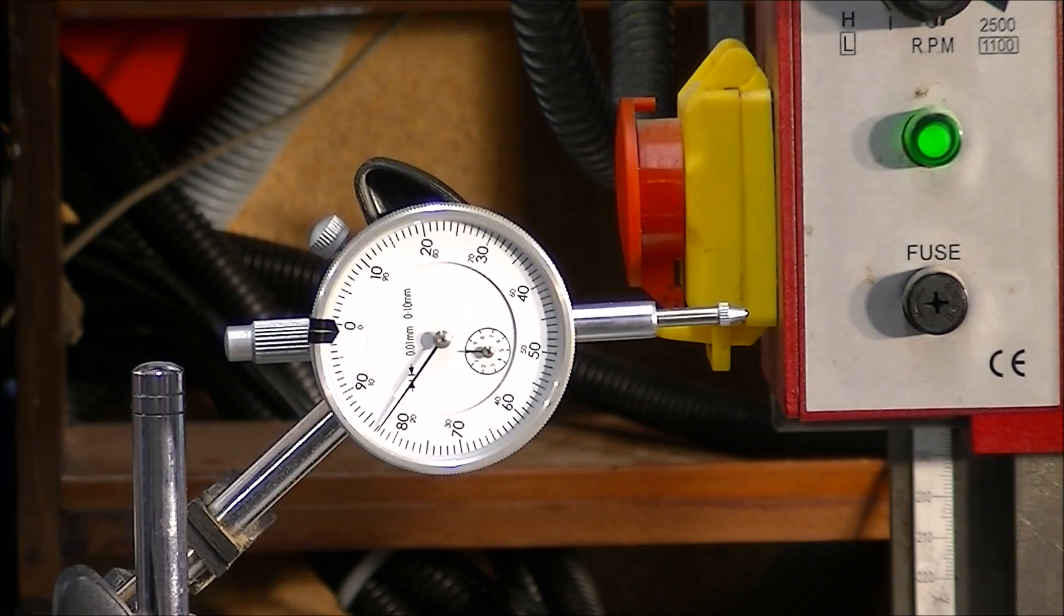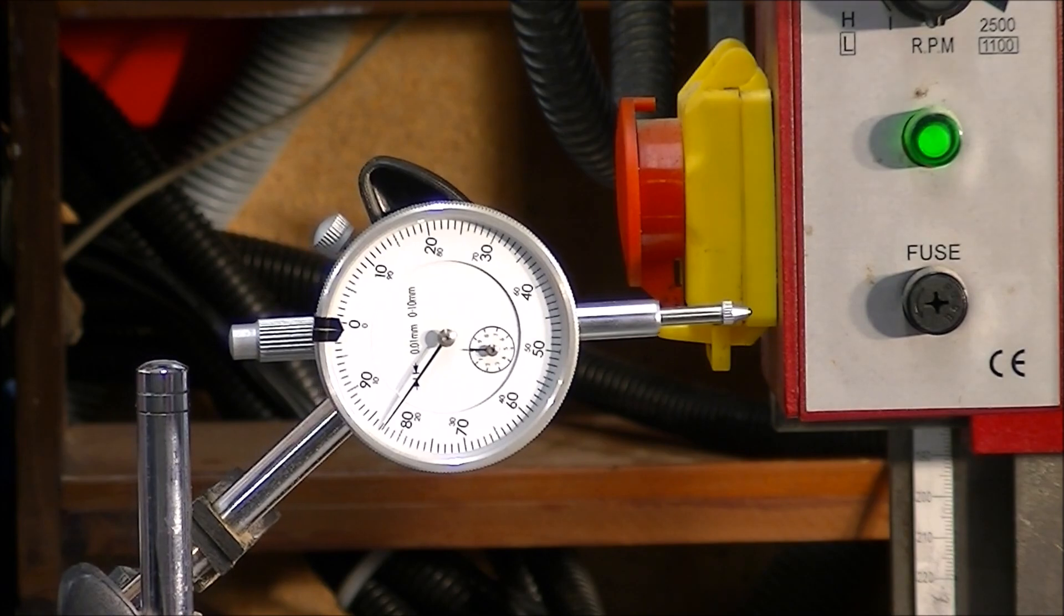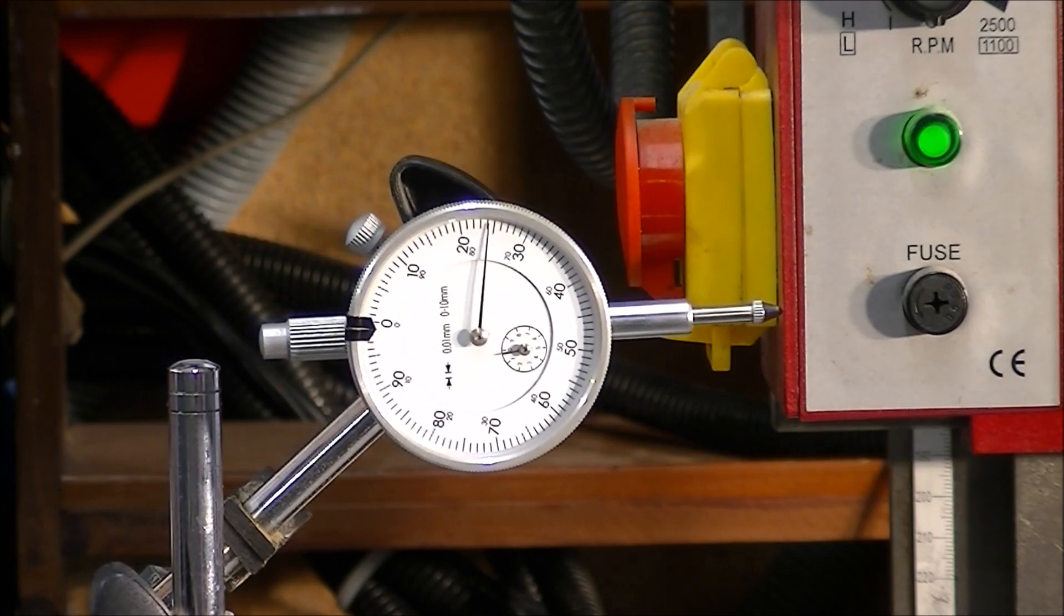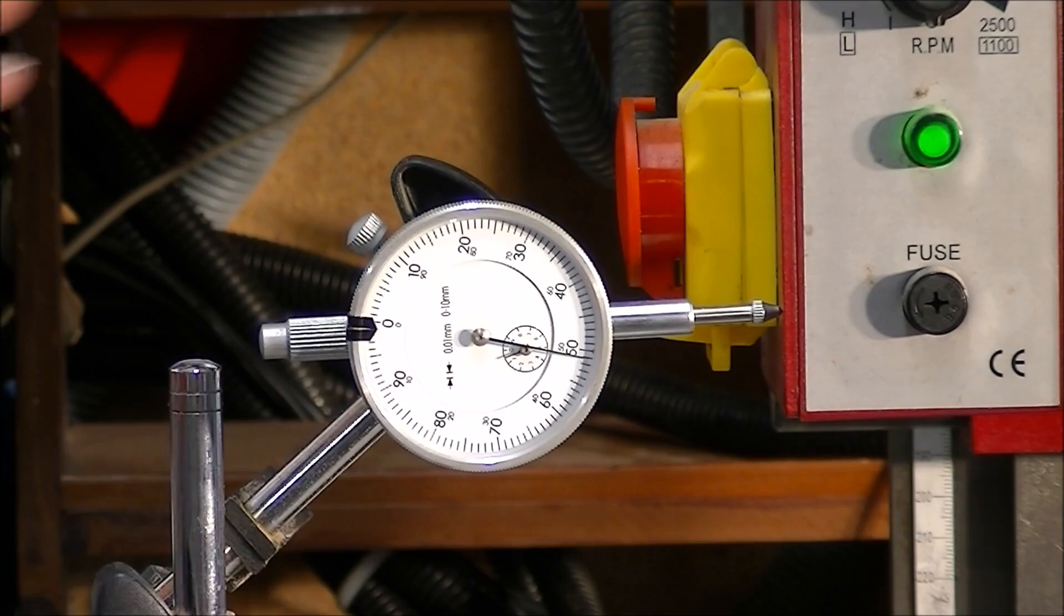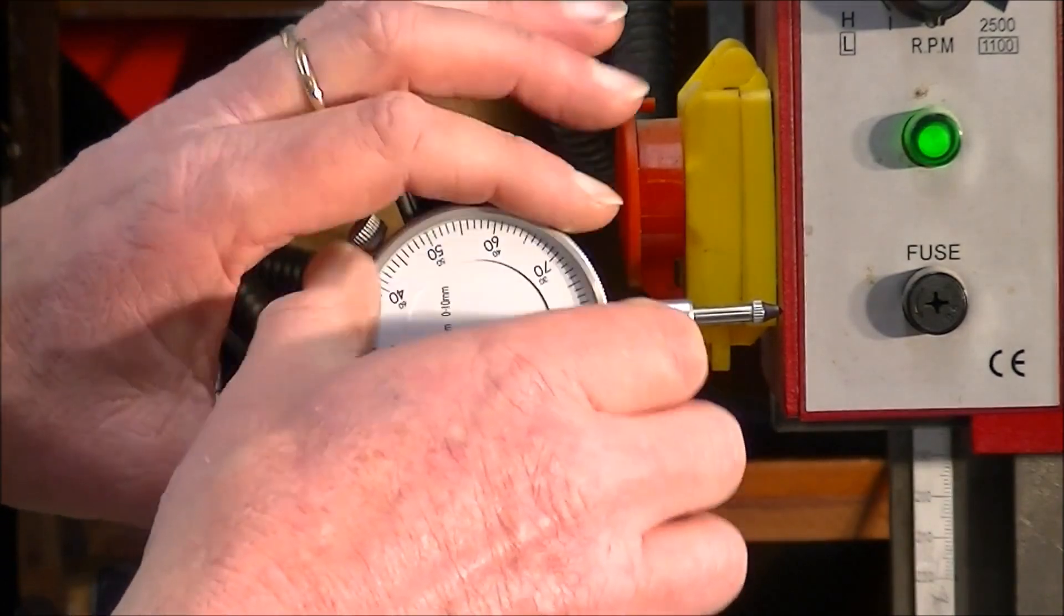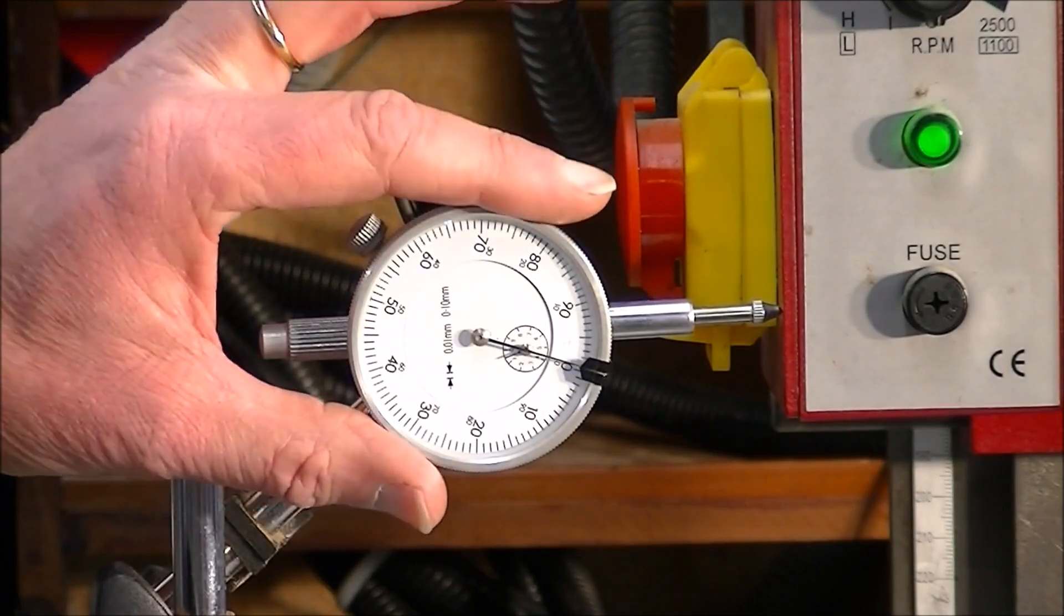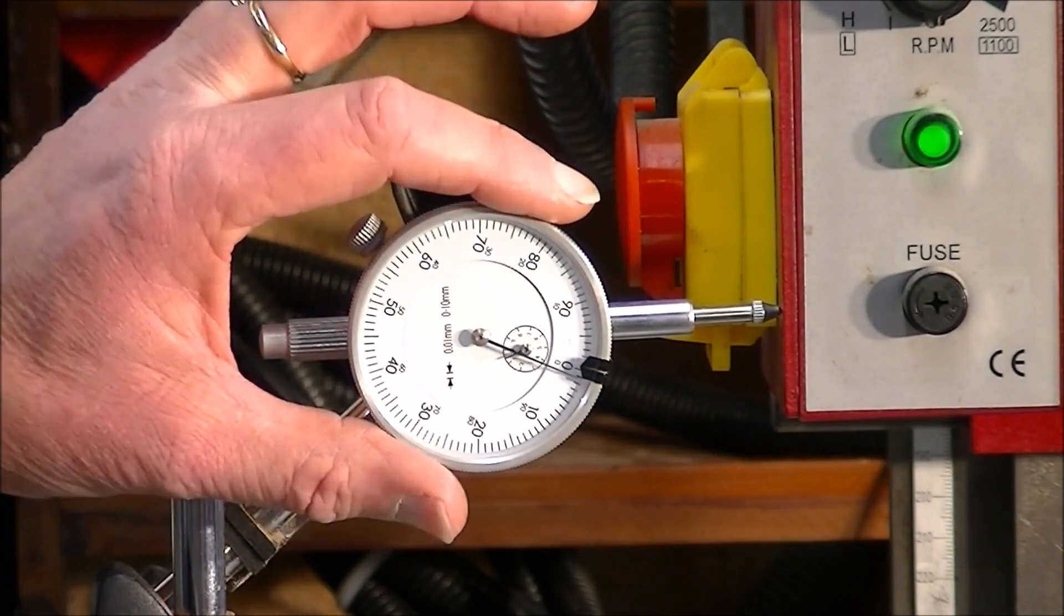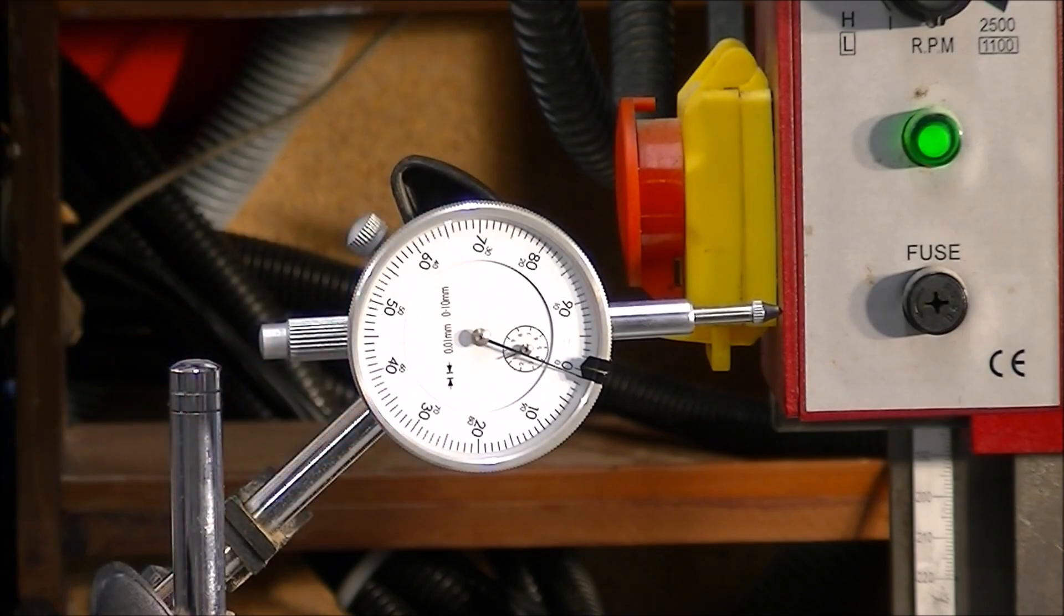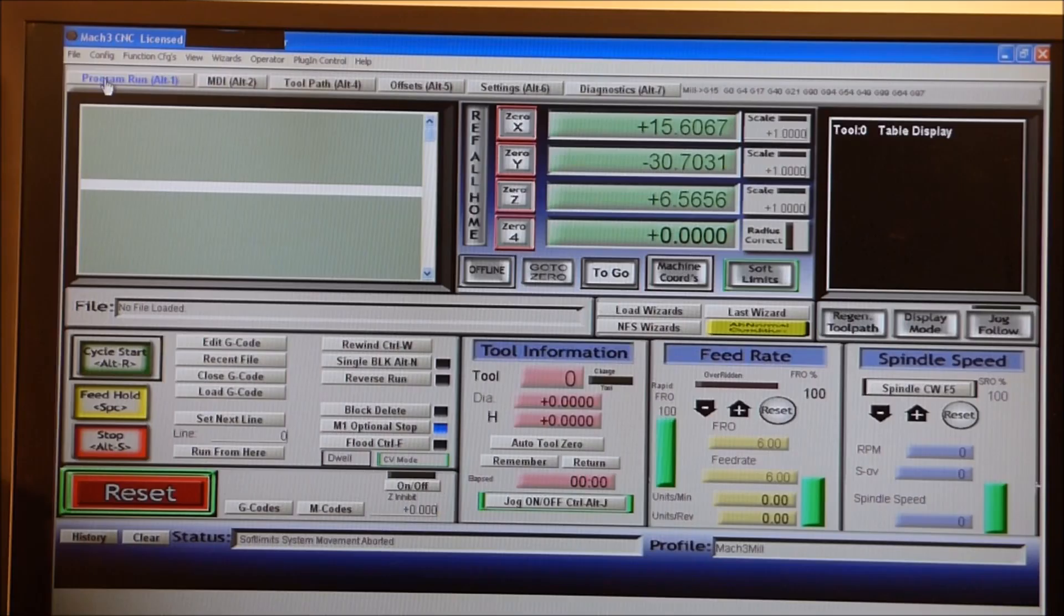I have the dial indicator connected to the x-axis and in Mach 3 we're going to use Mach 3 to calibrate the x-axis. To do that you just jog to position, turn that around and zero it. This is a very accurate device - each full revolution is one millimeter.